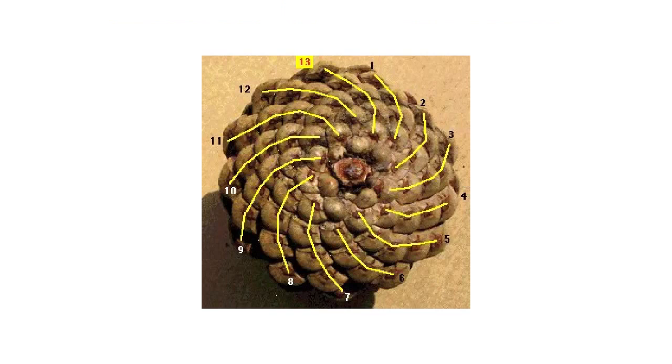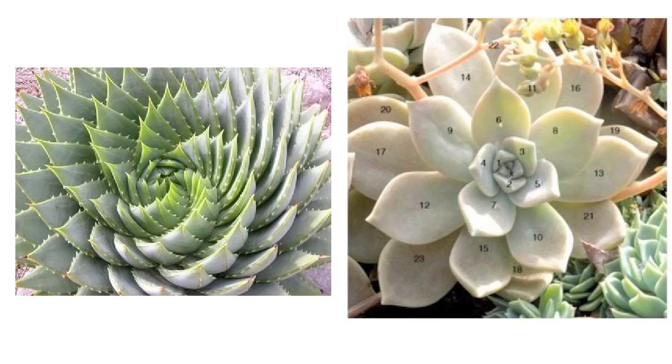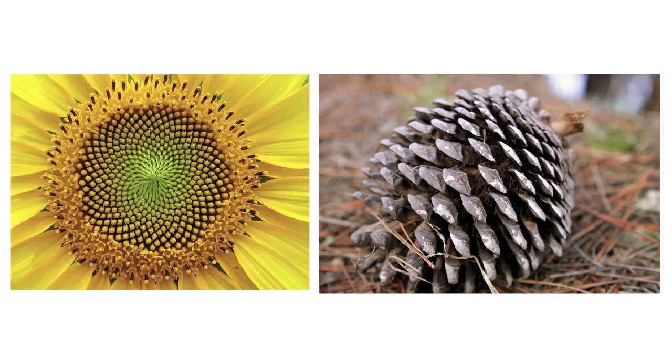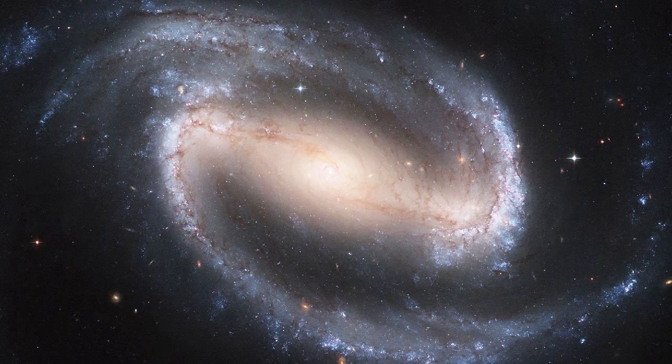This also happens with sunflowers, pine cones, and many plants in nature. In many cases, such as the pine cones and sunflowers, it flows in a double spiral or more, much like the spiraling arms of a galaxy. From the microcosm to the macrocosm, spirals are always present.